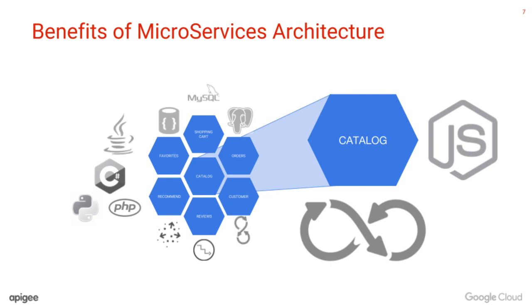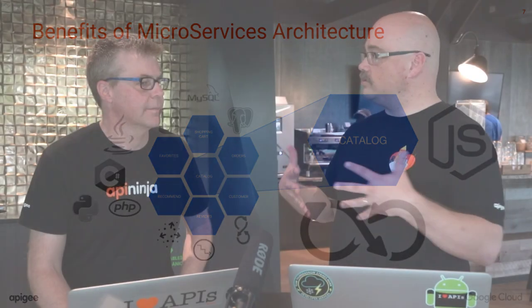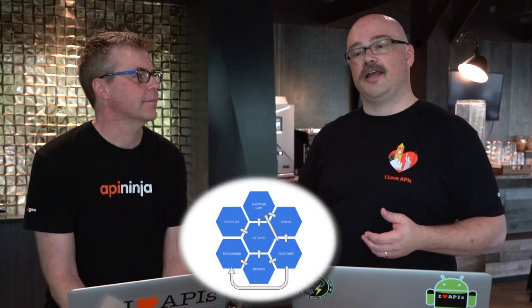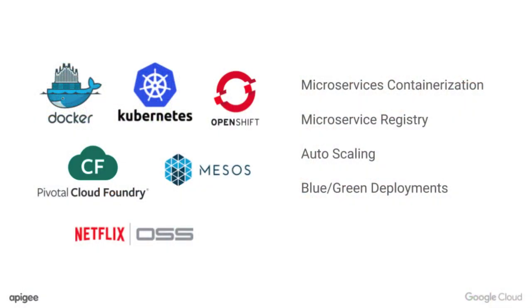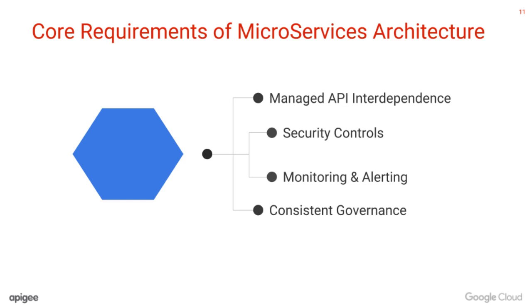That allows you a lot of flexibility when you're building your applications. But what comes with that is the need to connect those services together, because it's not just one service providing everything you need. If you had a standard e-commerce app, you might have one service providing a catalog, another providing the cart, another providing pricing information. We've solved the problem of the monolith, but with that comes a whole new set of challenges, solved in different ways across the industry. Technologies out there to support microservices include Docker, OpenShift, Kubernetes, and of course Pivotal Cloud Foundry. The requirements of microservices architecture include managed API interdependence, security controls, monitoring and logging, and consistent governance across your package.